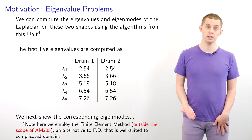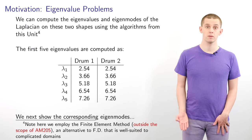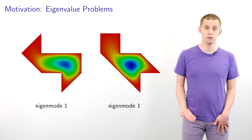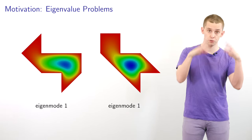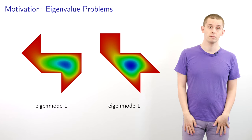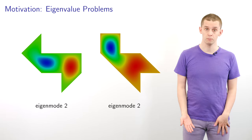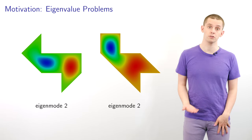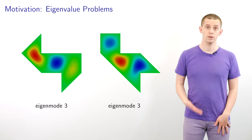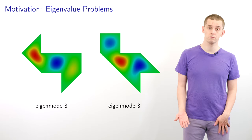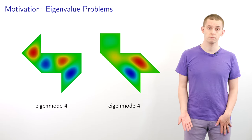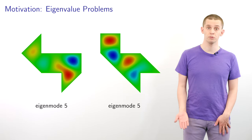We can compute the eigenvalues and eigenmodes of the Laplacian on these two shapes using the algorithms studied in this unit. Looking at the corresponding eigenmodes: the first eigenmode corresponding to the fundamental frequency corresponds to an oscillation where on both drums the entire surface oscillates backwards and forwards. We then look at eigenmodes 2, 3, 4, and 5, where we start to see more complicated oscillations of the drum surfaces.